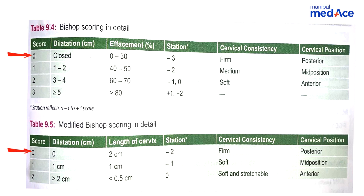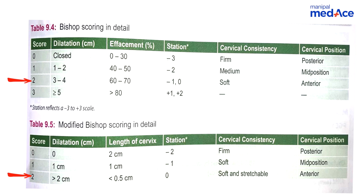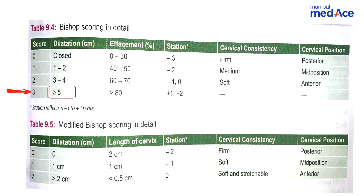Score 0 in dilatation is closed, both in Bishop's as well as modified. Score 1 is 1–2 cm in Bishop's and 1 cm in modified. Score 2 is 3–4 cm in Bishop's and more than 2 cm in modified. Anything more than 2 cm in modified is a score 2 — there is no score 3 in modified Bishop's. Score 3 in Bishop's is more than 5 cm. So: closed, 1–2, 3–4, more than 5.